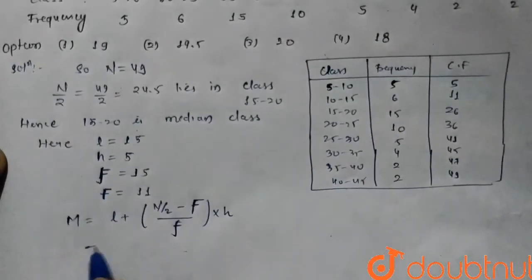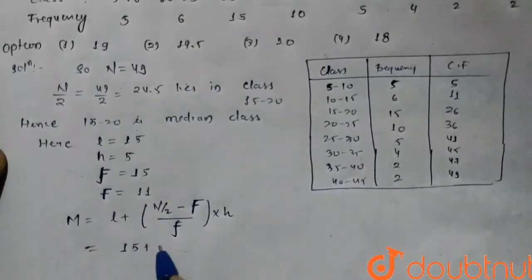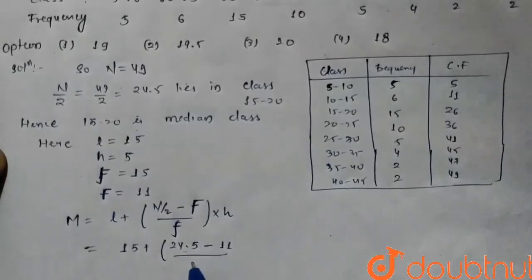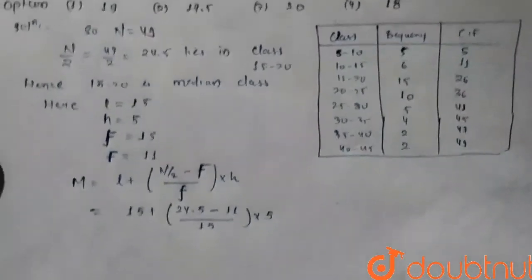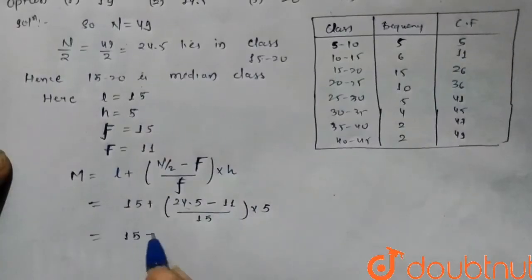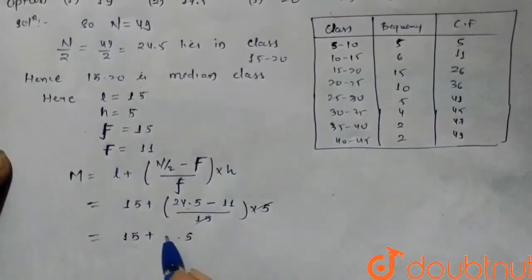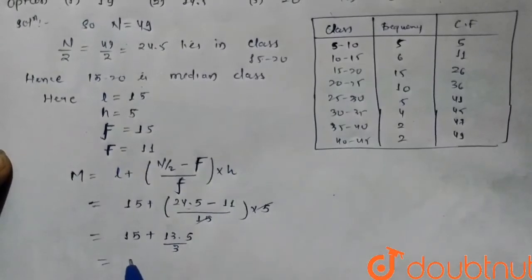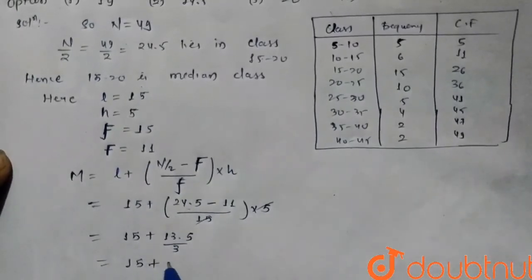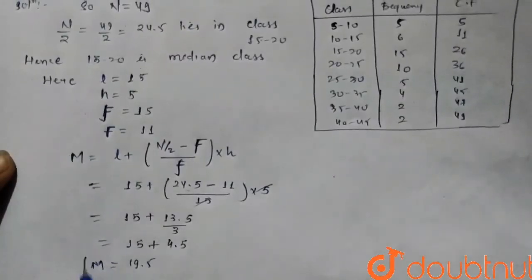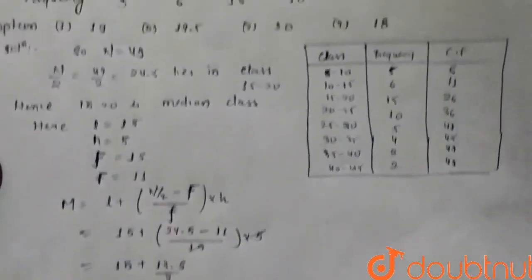So on putting the values it is 15 plus 24.5 minus 11 upon the small f is 15 into 5. So on solving, 15 plus it is given as 13 by 3, so 15 plus 4.5 which is equal to the median of given frequency distribution table is 19.5. So option 2 is correct.